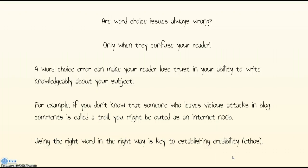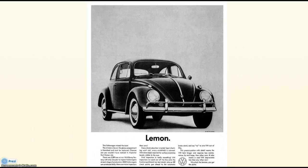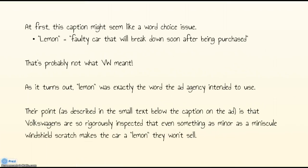So word choice errors aren't always wrong, but they make your writing way less effective than it could be. There are some writing situations when you can get a great effect by using an unexpected word. For example, look at this Volkswagen Beetle ad from 1960 — it shows a black and white picture of the car with just one caption: 'lemon.' That's not something you generally associate with a car in a positive way, since a lemon is a faulty car that's going to break down right after you buy it. But as it turned out, 'lemon' was exactly the word Volkswagen intended. Their point — in the small text below the caption — is that Volkswagens are so rigorously inspected that even something as minor as a tiny windshield scratch makes the car a 'lemon' they won't sell. So sometimes those word choice issues can make your point, but sometimes they can break your point, so you want to be careful.